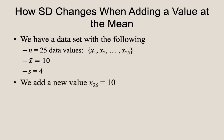Now let's add a new value to the data set. The new value, x sub 26, is the number 10, which happens to equal the mean of the data.